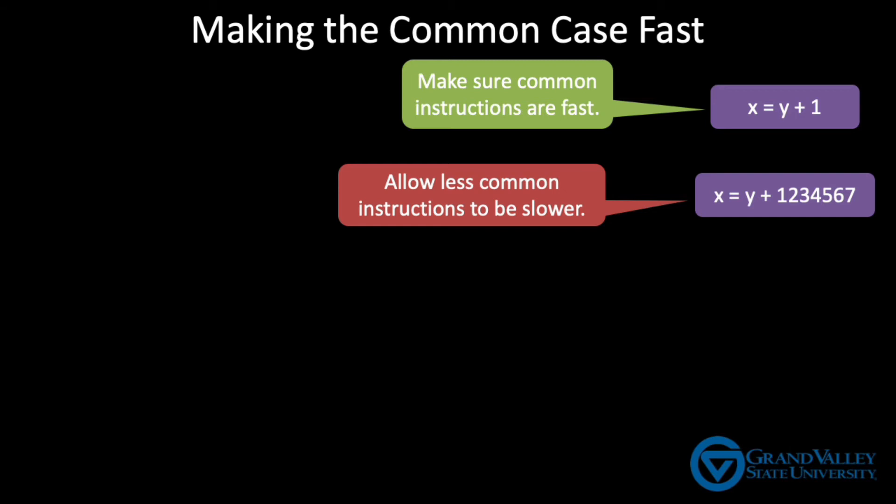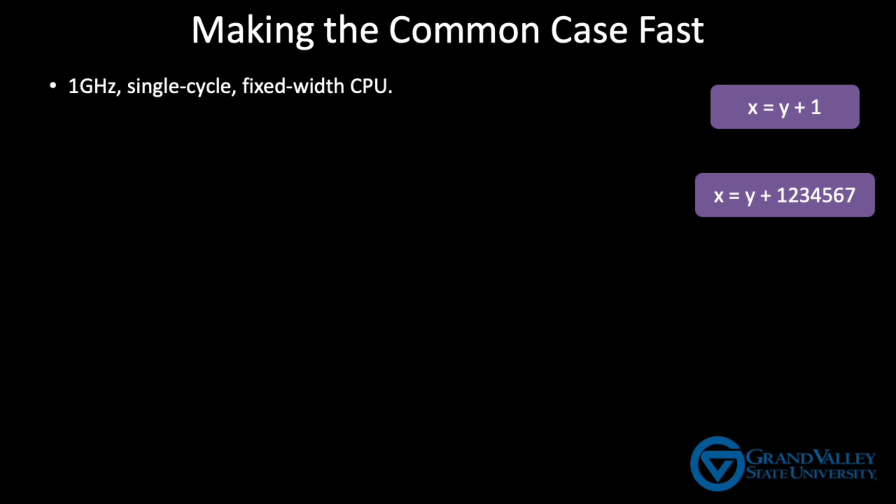Consider this hypothetical example. Suppose we have a one gigahertz single cycle CPU that uses a fixed width instruction set, which is what we've been building thus far. Also assume that one-tenth of one percent of the instructions have large immediate values. If we assume that each instruction takes exactly one cycle, then it takes one second to run one billion instructions. Of course, we can't quite reach this ideal because we need some way of handling those large immediate values. So let's consider two alternatives.